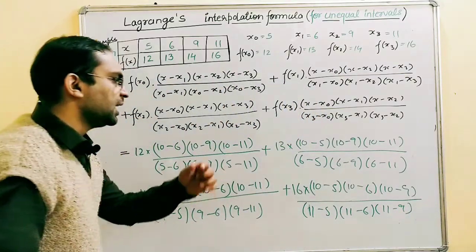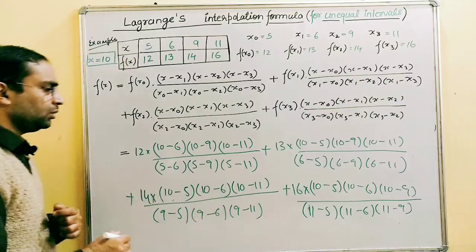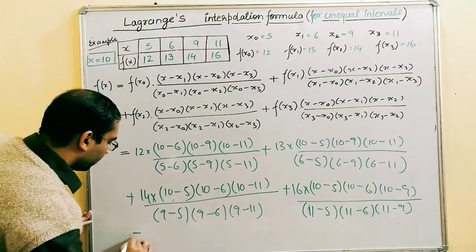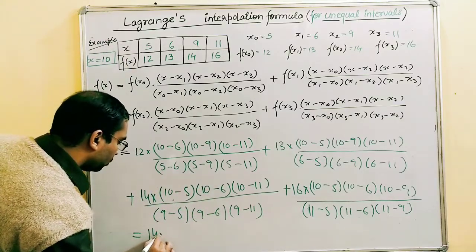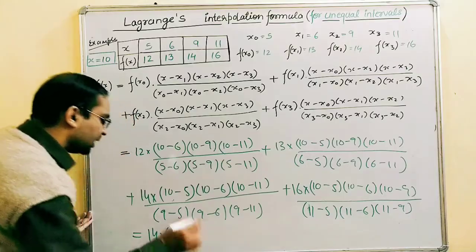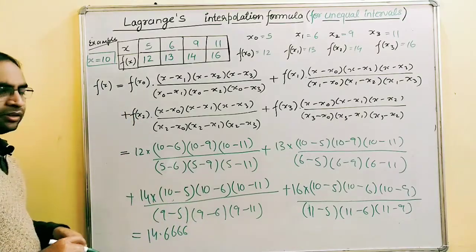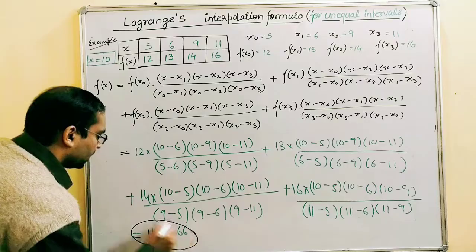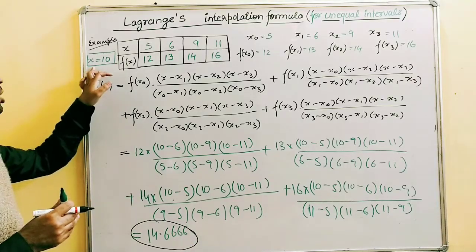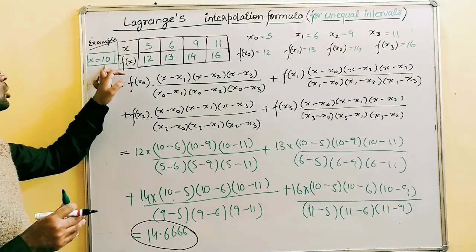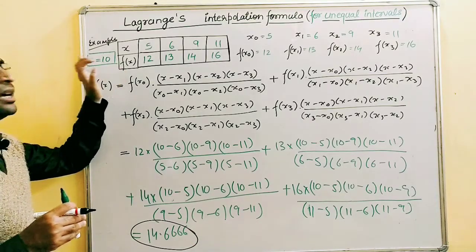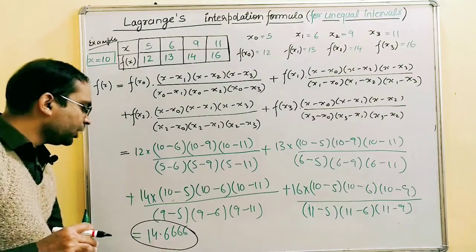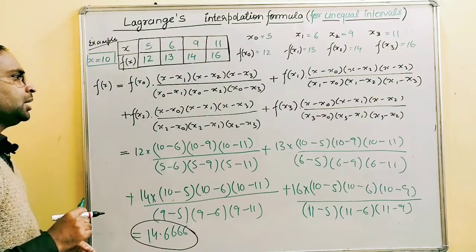Using a calculator to solve these values, the result comes to 14.6666... So at x = 10, f(x) ≈ 14.6667. This is the final result for the given questioned value.